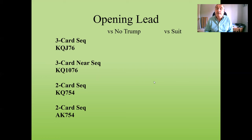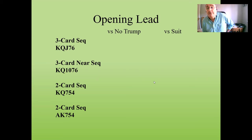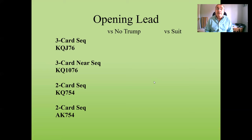The first question is: against three no trump, which card would you lead from king-queen-ten-seven-six? The second question, which you may need to scroll down to see, is: which card would you lead if you had king-queen-seven-five-four? Have a go at those two questions and decide which card you would lead in each situation.